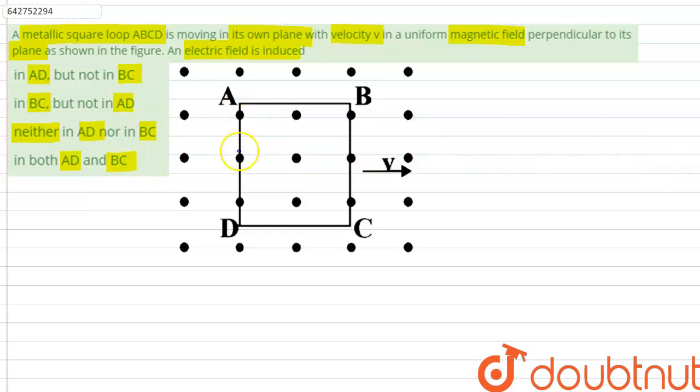If the square loop was moving with a velocity v in its own plane and there was a magnetic field perpendicular to the plane of loop.